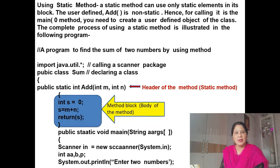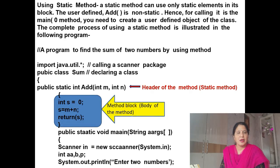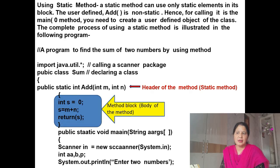Next line: 'public static int add'. We will not write 'public static void main'. This is the function name 'add'. Now we will declare two elements — 'int m' and 'int n' — because in this program we want two numbers. This is the header of the static method.